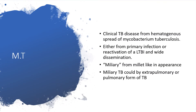Miliary Tuberculosis is a clinical tuberculosis disease from hematogenous or lymphatic spread of Mycobacterium tuberculosis. It's either from primary infection or reactivation of a latent tuberculosis infection, with wide dissemination. Miliary is a word for millet-like appearance. Miliary TB could be extra-pulmonary — that is, affecting other organs besides the lungs, like the brain, central nervous system, liver, and spleen.